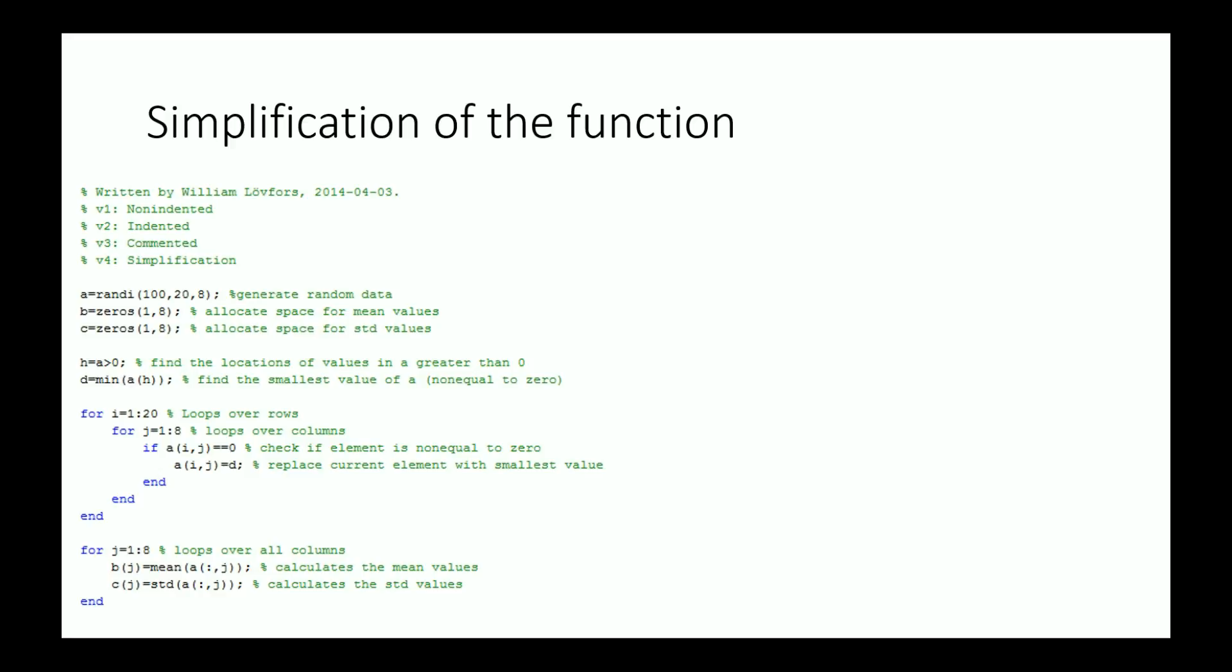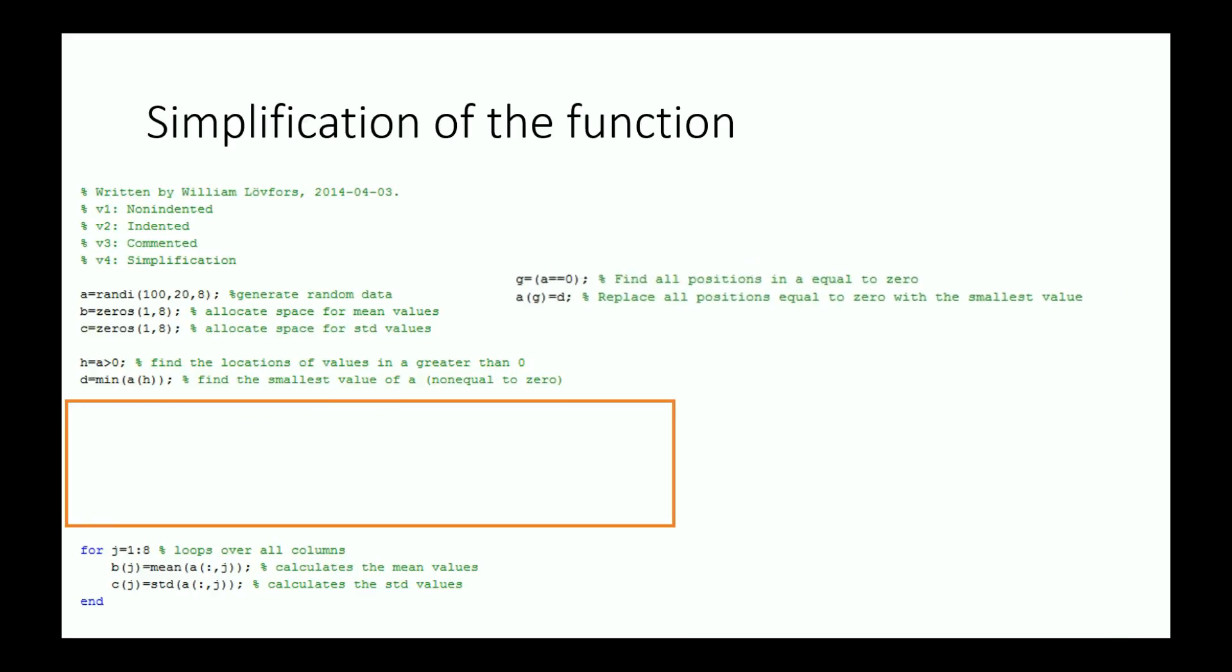Okay, so if you look at the code now you can see that it's still more complex than it has to be. For example, these lines here. What they do is they find the elements that are equal to zero and then replace them with the minimum value that we got earlier. And this can actually also be done in a much easier way. So if you look at this code, all we need to do is to find the indexes of all elements that are equal to zero. And then replace all of these with the minimum value. So there you have it. Two lines instead of seven. No loops. Great. Let's replace it.